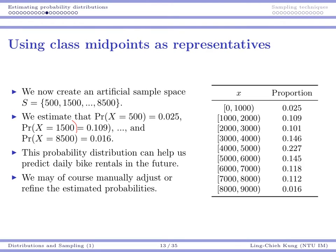Once we have these numbers, we have our estimation of the probability distribution, which can help us predict future bike rentals. We may manually adjust or refine these numbers. The key point is that we don't predict the probability of each individual value — instead we estimate the probability for each class, and for each class we use one value to represent it.